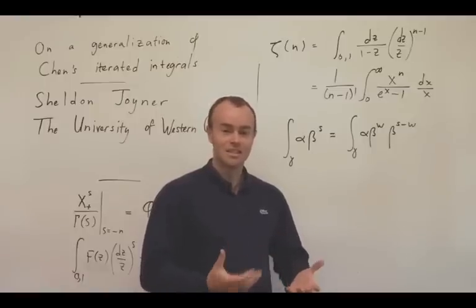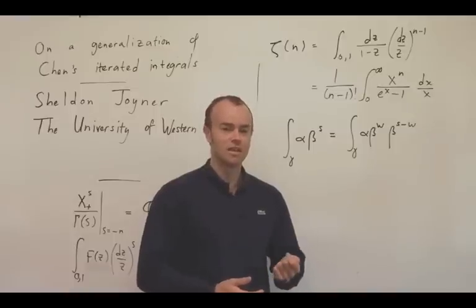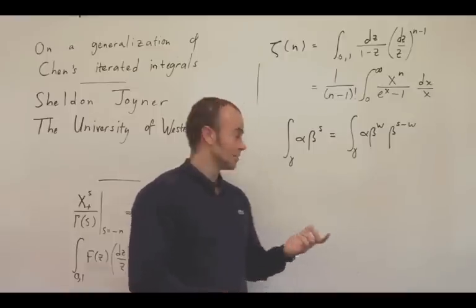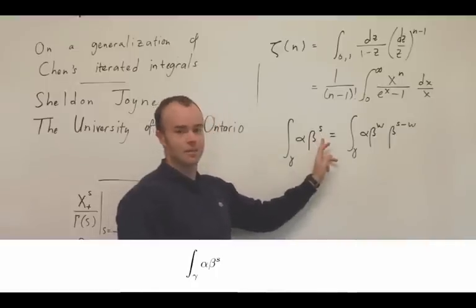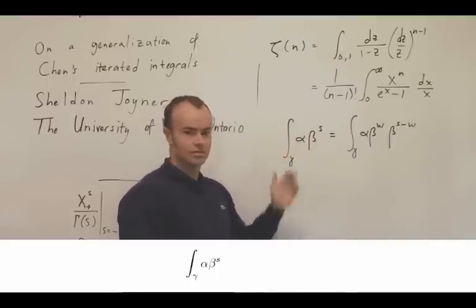In this particular case, it's easy to imagine how we would generalize these formulae, and this is really the basis for our definition. We're able to define an object where alpha and beta are holomorphic one forms on P1 minus three points, and s is some complex parameter chosen such that the integral converges in a suitable sense.